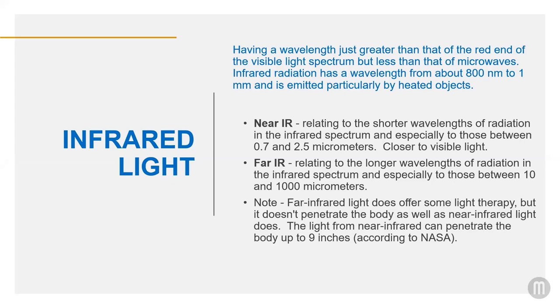Infrared light has a wavelength greater than red visible light and is invisible to your eyes. Windows and window films are concerned with wavelengths from 780 to 25,000 nanometers. Near IR is between 780 and 2500 nanometers, while far IR is between 2500 and 25,000 nanometers. Near IR is the heat you feel from the sun, while far IR is heat from an object like a fire or stove top. Near IR is measured and reported as IR rejection from 780 to 2500 nanometers, and far IR is measured as emissivity from 2500 to 25,000 nanometers.